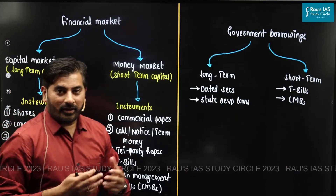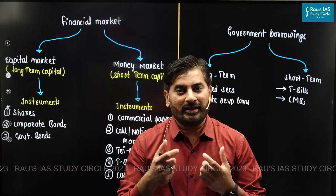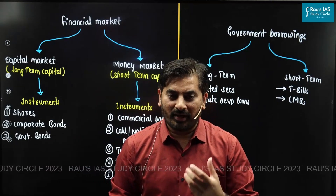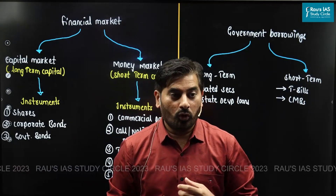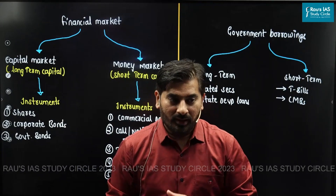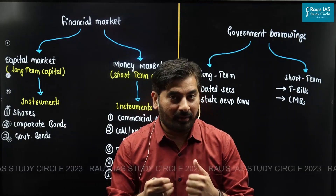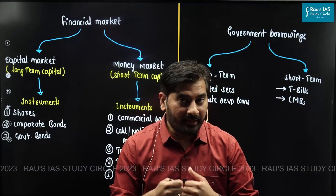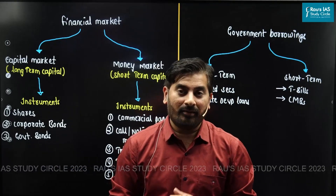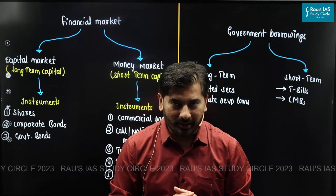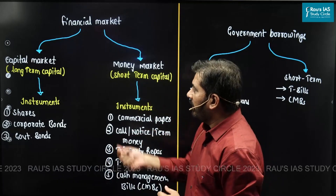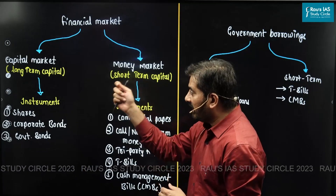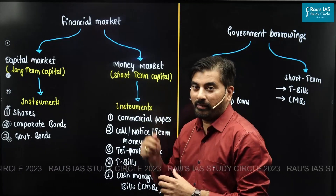In any economy, you will come across the financial market. Financial market basically means that there are certain entities who are in need of money. These entities can raise money or borrow money from other entities who might be having a surplus amount of money. Within the financial market, you have two segments — the capital market and the money market.